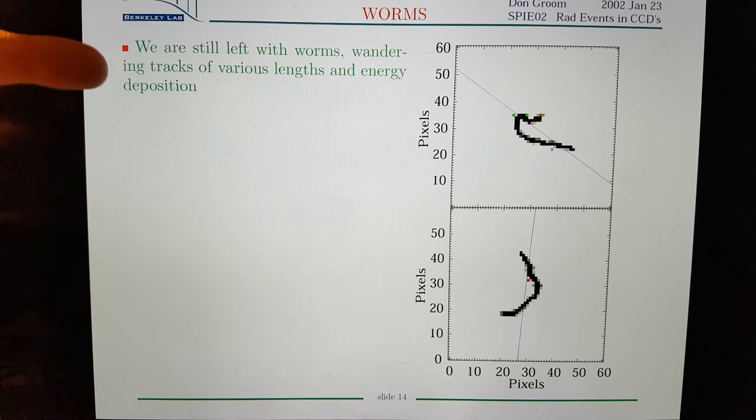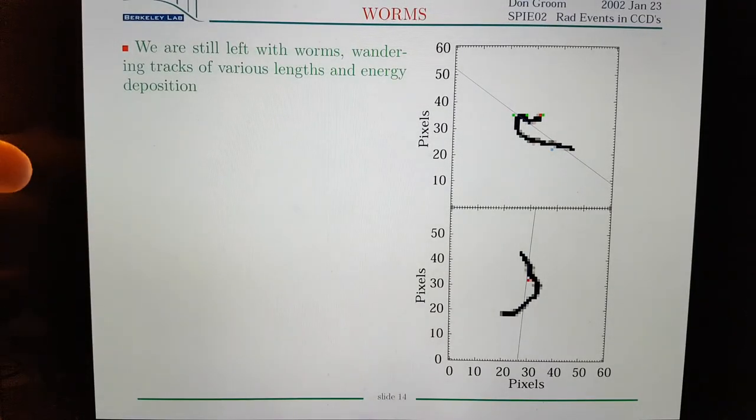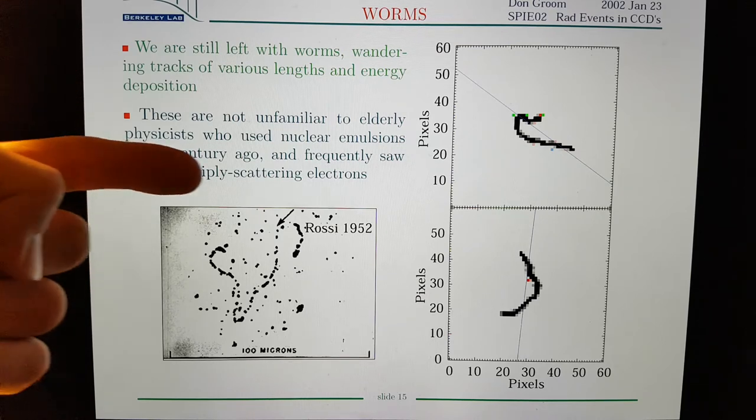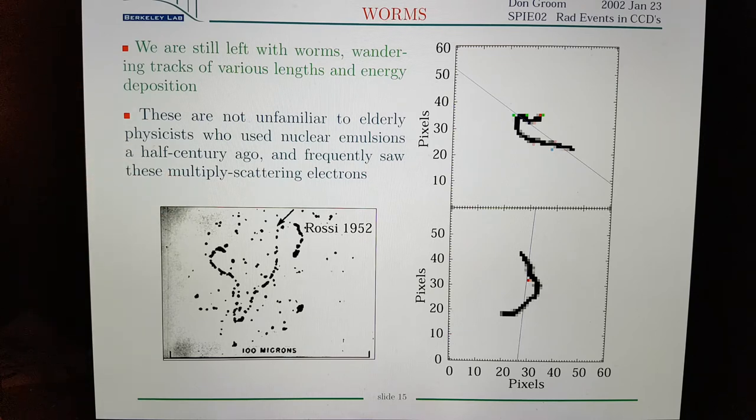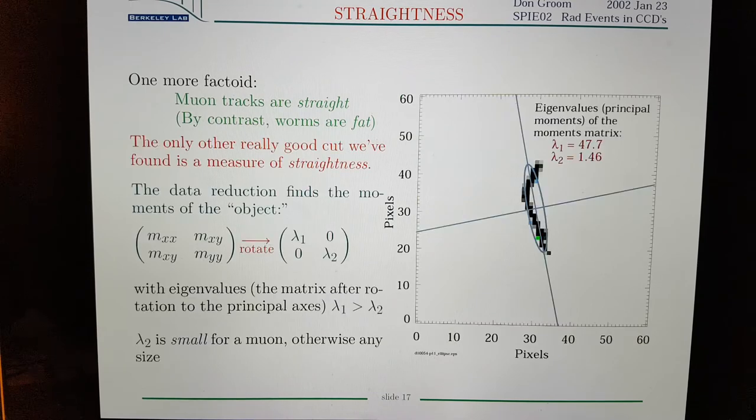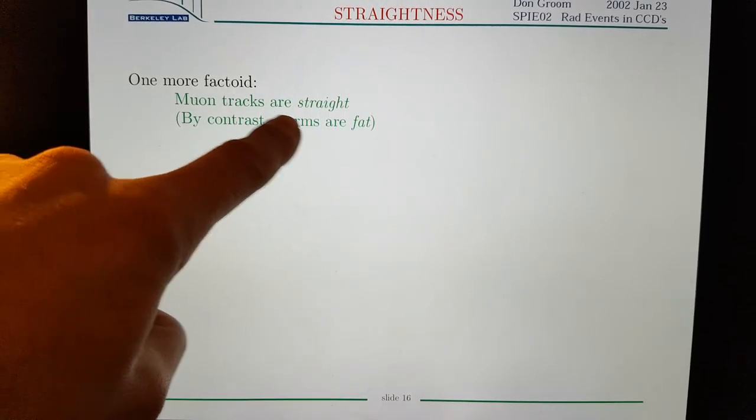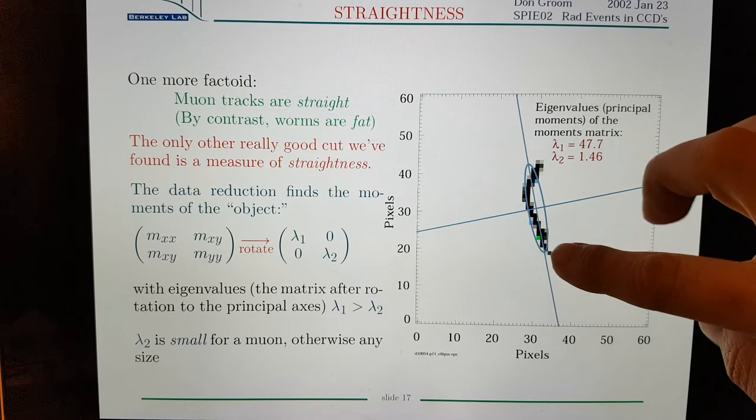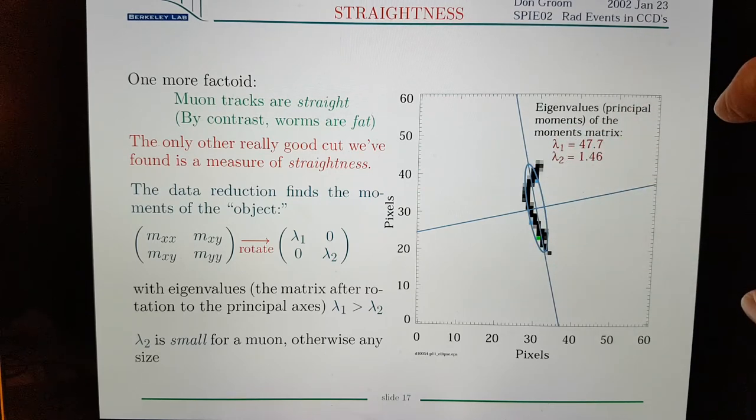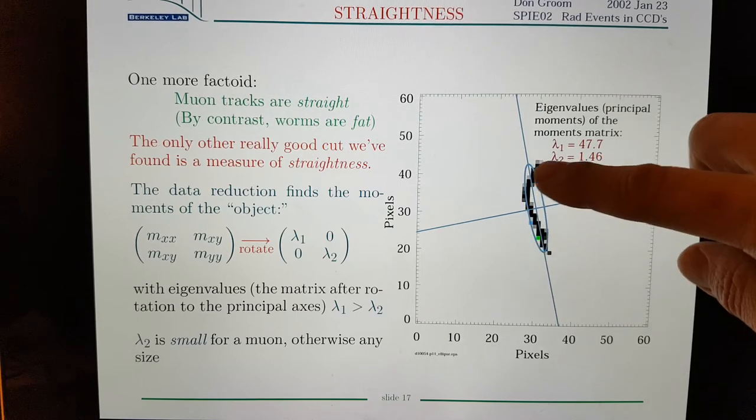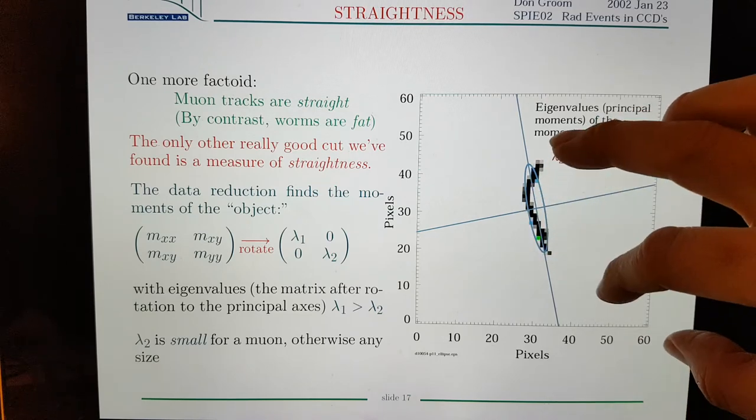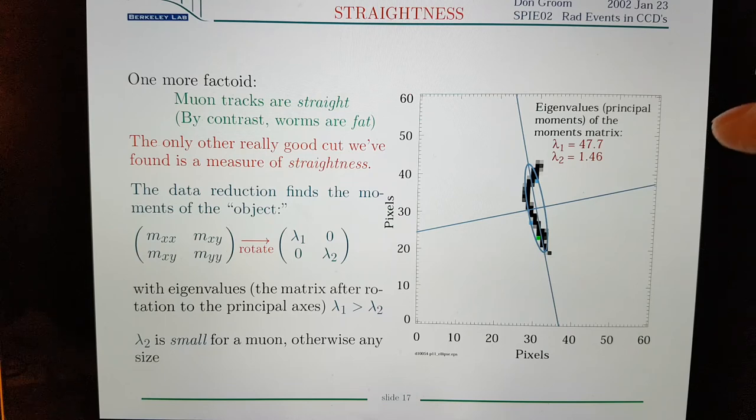He's saying that they're left with these worms and apparently these are very familiar to people who used emulsions half a century ago. And these are multiply scattering electrons. So he's saying muons are straight, the tracks are straight rather, but by contrast worms are fat. So essentially they can discriminate. The applications find some bright spots in your phone CCD that's been covered and then they look for if they're squiggly by looking at how elliptical they are by using software to analyze their shape. And that would determine whether they're straight.